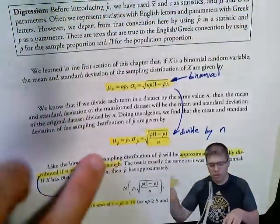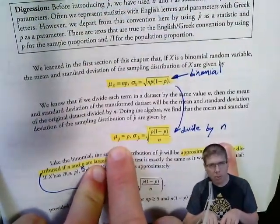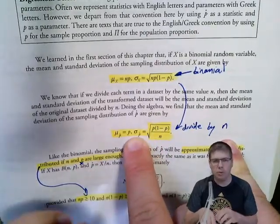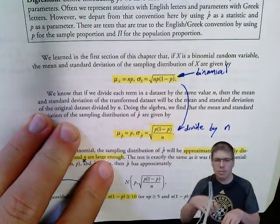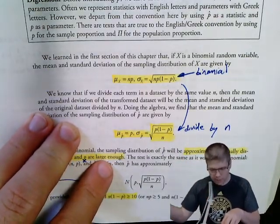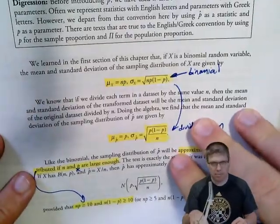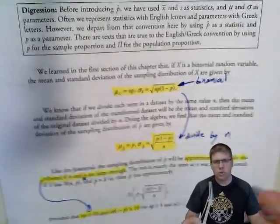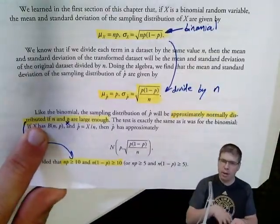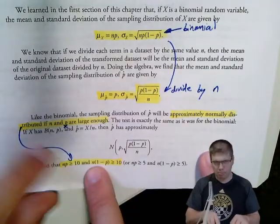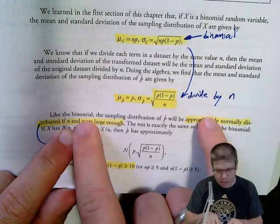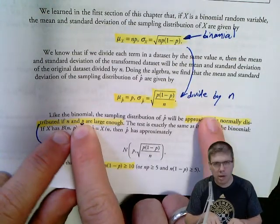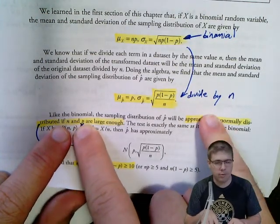On average, the sample proportion P-hat equals the population proportion P — so it's unbiased. The standard deviation of P-hat is √(p(1−p)/n), and that n in the denominator means larger samples give less variability from sample to sample. The shape is approximately normal — connecting back to why the binomial distribution becomes normal — as long as the conditions are satisfied.